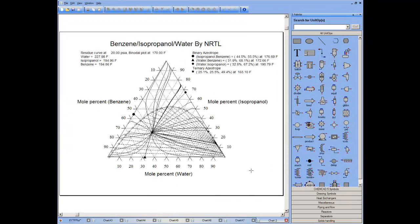This is a combination of a residue curve and a binodal curve. This is a standard triangular diagram with the faces of benzene, isopropanol, and water. Some points of interest.